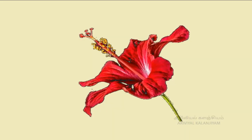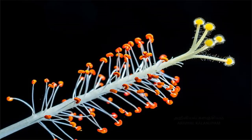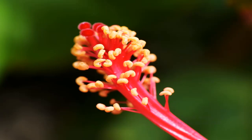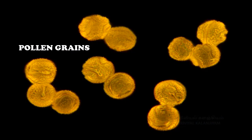Inner to this corolla in hibiscus, we can observe a long tube on which many stamens are arranged. This whorl of a flower is called androecium. Each stamen consists of two parts: a stalk called filament and a lobe called anther. If you touch these lobes in a mature flower, we can get a powdery substance called pollen grains, a male reproductive part.